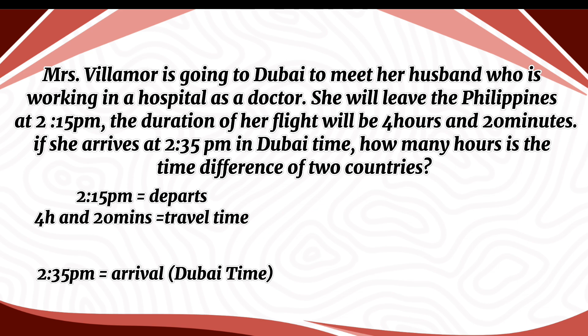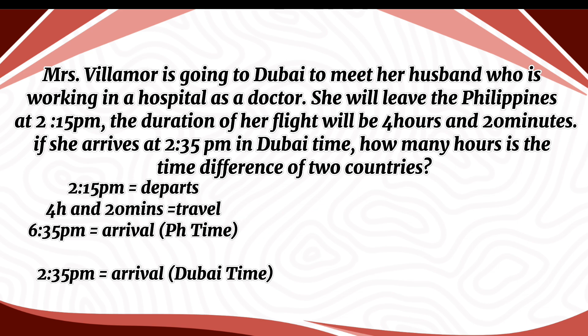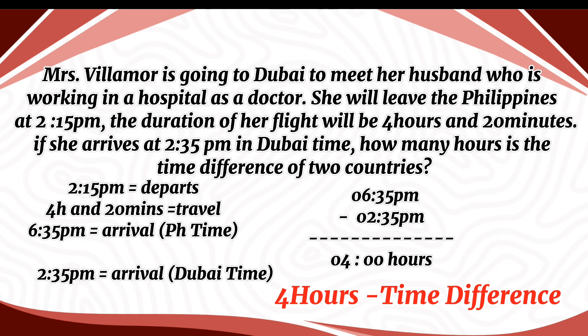We have to calculate the arrival time in the Philippines. To find the time difference, we need to determine when she will have to arrive in the Philippines based on the flight duration. Adding 4 hours and 20 minutes to her departure time, 2:15 p.m., gives us 6:35 p.m. Philippine time. Now let's calculate the time difference of those countries. Philippine time, 6:35 p.m., this is the arrival time. The arrival time in Dubai is 2:35 p.m. We subtract 2:35 p.m. from 6:35 p.m. So we got 4 hours time difference in these two different countries.